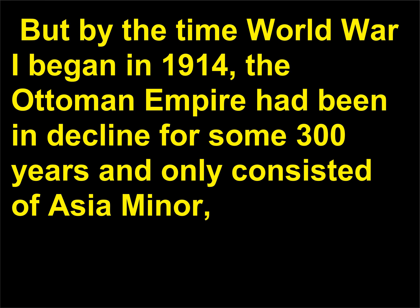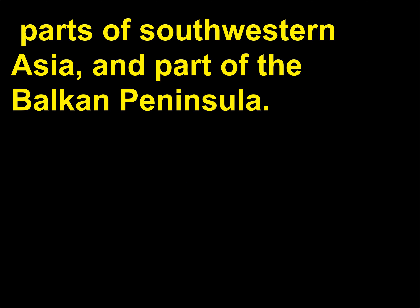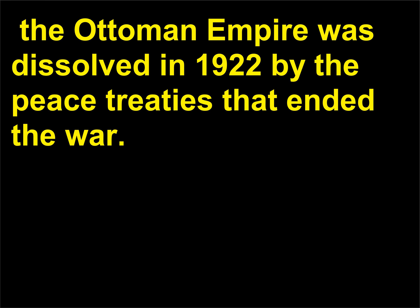But by the time World War I began in 1914, the Ottoman Empire had been in decline for some 300 years and only consisted of Asia Minor, parts of southwestern Asia, and part of the Balkan Peninsula. As one of the losing central powers, the Ottoman Empire was dissolved in 1922 by the peace treaties that ended the war.